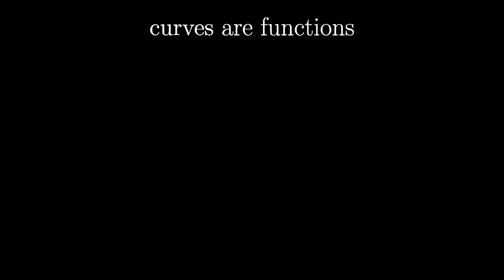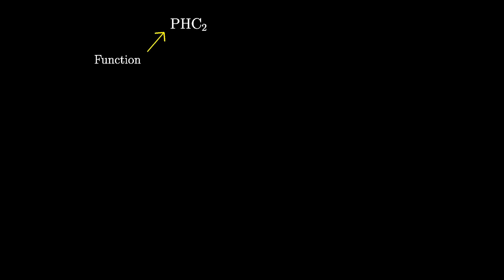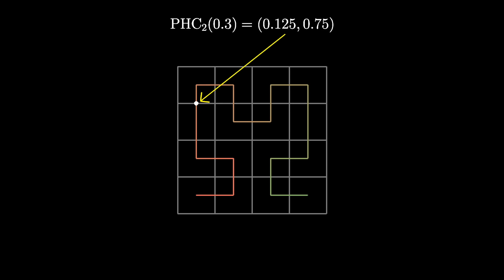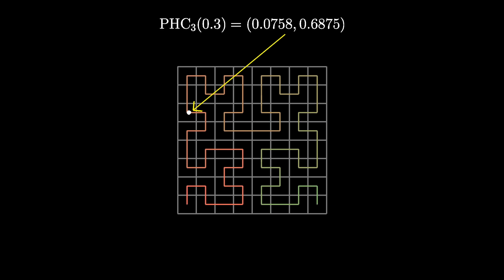Now, defining this limit rigorously is delicate. You first have to formalize what these curves are as functions, specifically functions which take in a single number somewhere between zero and one as their input, and output a pair of numbers. This input can be thought of as a point on the line, and the output can be thought of as coordinates in 2D space, but in principle it's just an association between a single number and pairs of numbers. For example, an order two pseudo-Hilbert curve as a function maps the input 0.3 to the output pair 0.125, 0.75. An order three pseudo-Hilbert curve maps that same input 0.3 to the output pair 0.0758, 0.6875.